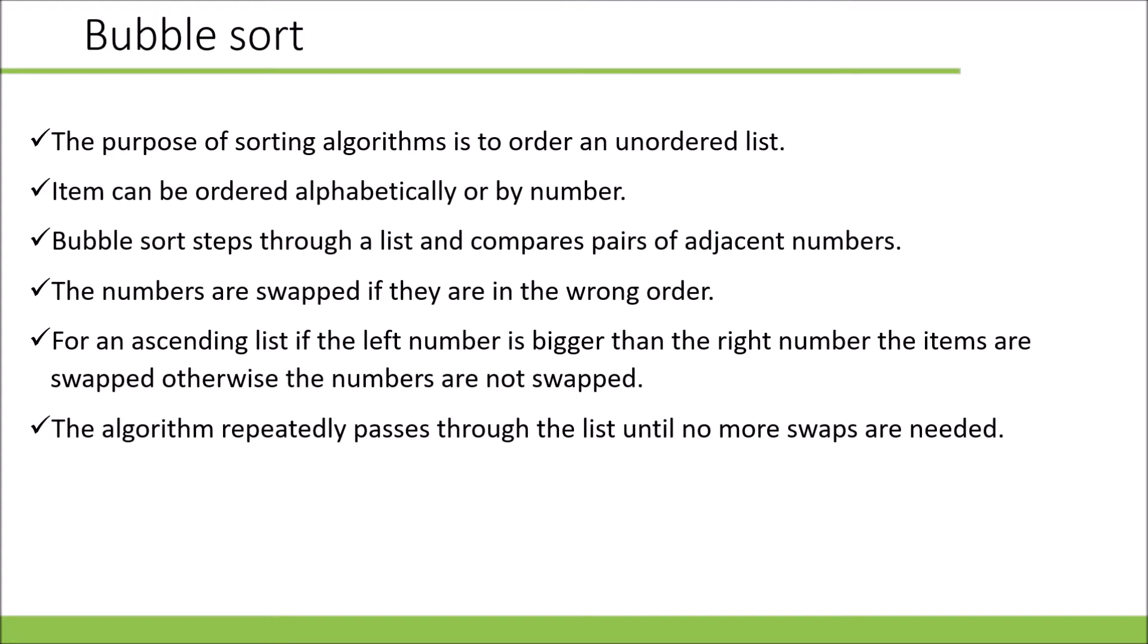The algorithm repeatedly passes through the list until no more swaps are needed, then stops. After each pass, the largest number will be in the correct place at the end of the list. This is what we mean by bubble - the large numbers bubble to the end of the list.